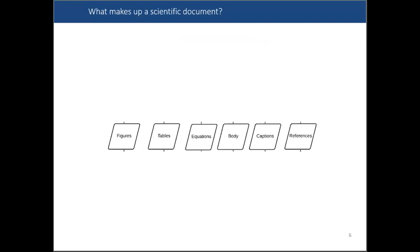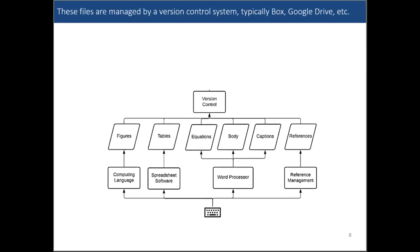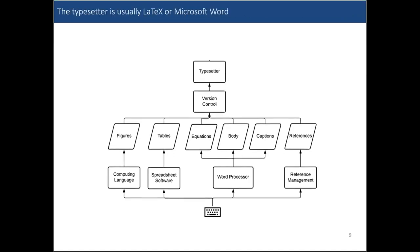So what makes up a scientific document? You've got figures, tables, equations, some body text, captions, and references. You might use a computing language like MATLAB or Python to produce your figures, Excel to make tables, Microsoft Word or LaTeX to write the equations, and type out body text and captions. You've got software like Mendeley or Zotero to manage references. Maybe you do some version control like saving to a Box or Google Drive folder. And maybe you're using LaTeX to take care of some of the typesetting automatically, or maybe that's Microsoft Word for you.